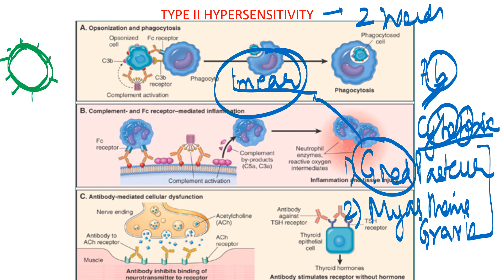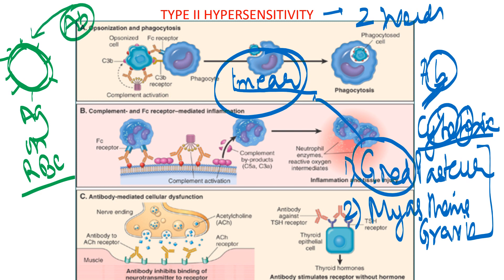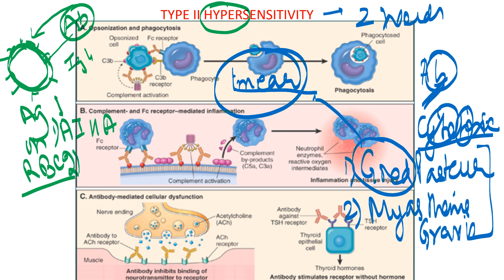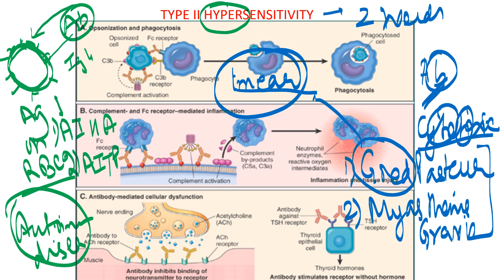If the body cannot recognize RBC antigens as self and considers them foreign, then the antibodies — mostly IgG and IgM type — will react and lead to lysis. This results in autoimmune hemolytic anemia. A similar phenomenon with platelets leads to autoimmune thrombocytopenic purpura. So autoimmune diseases are another example of type 2, along with Goodpasture syndrome and myasthenia gravis.